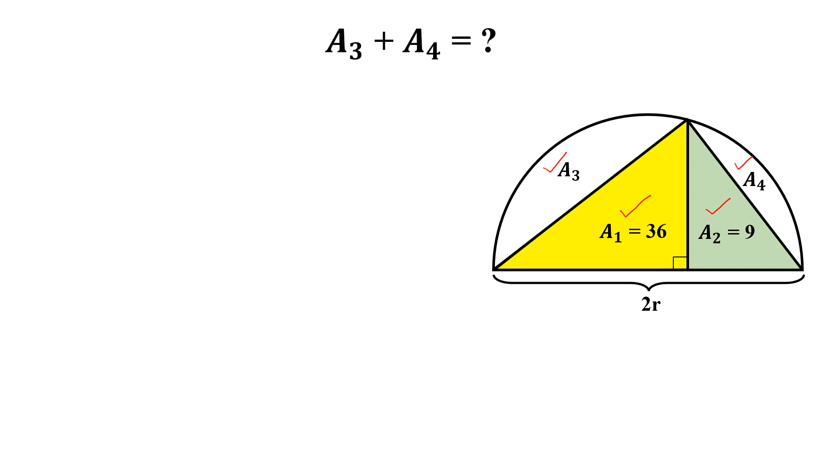How can we solve this? Let this length is e, this length is b, and this length is h. Then by the yellow triangle we can write ah divided by 2 equal to 36. And similarly from the green triangle we can write bh divided by 2 equal to 9.